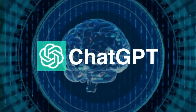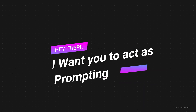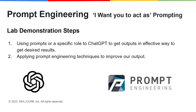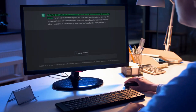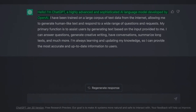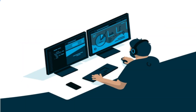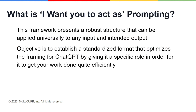Welcome back to another video of the prompt engineering course. In this video we'll be discussing our last type of prompting, which is 'I want you to act as' prompting. Before starting, let me demonstrate this lab — you'll be using prompts for a specific role in ChatGPT to get outputs in a very effective way to get desired results, and we'll also be applying prompt engineering techniques to improve our output.